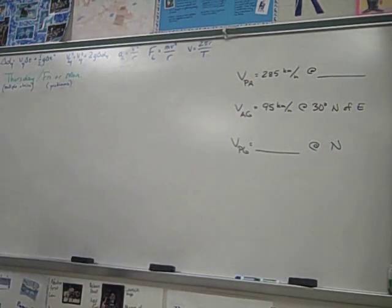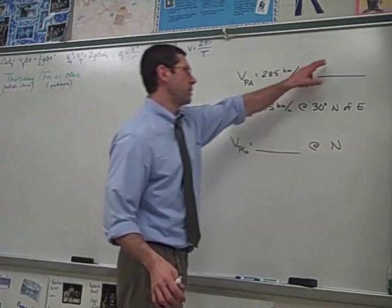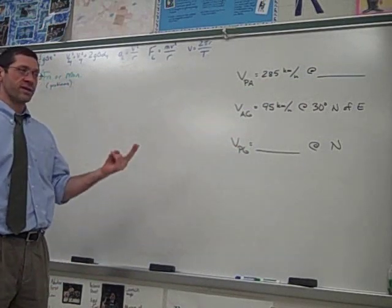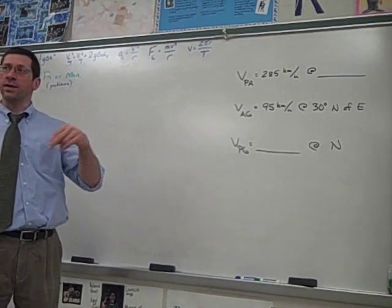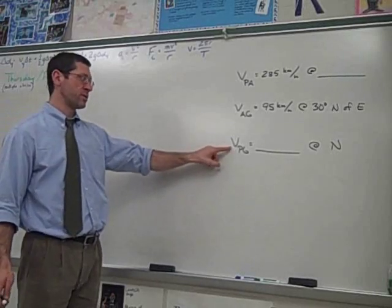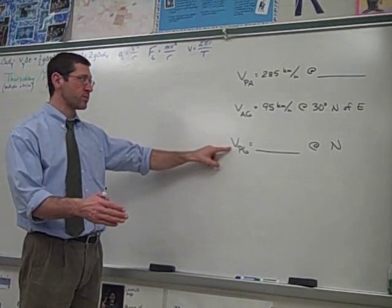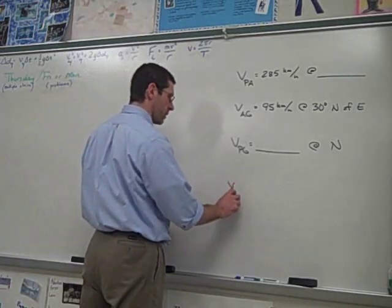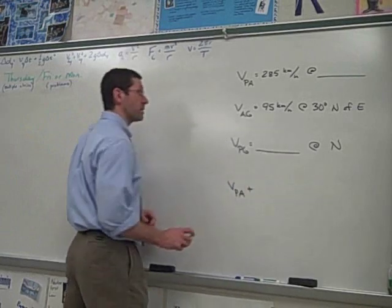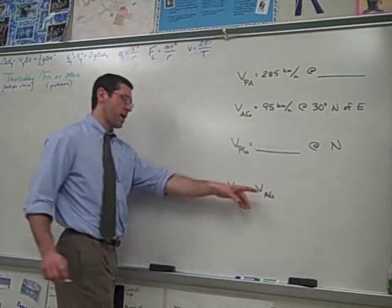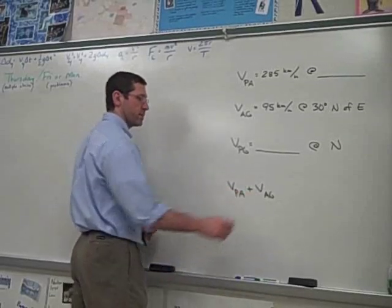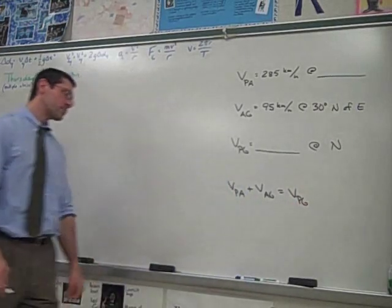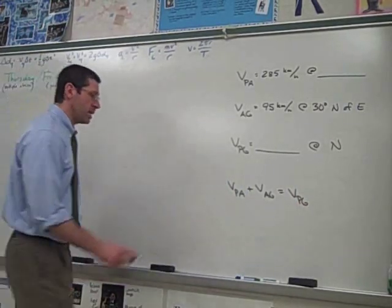So those are the three velocities and we don't know either of these two values. Now we know that two of these vectors need to add and then give us the result that we want. Well this is what we want to measure relative to the ground, what is the plane's velocity. So that means that these two have to add together. So as a check we'll write out our relative velocity equation: VPA + VAG, the inside subscript cancels out, and we get VPG.